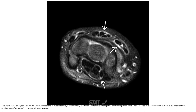T2 fat-saturated MRI in an 8-year-old with JIA and wrist stiffness, showing hyperintense signals surrounding the flexor and extensor tendons of the wrist. There was also mild enhancement at this level after contrast administration, consistent with tendon synovitis.